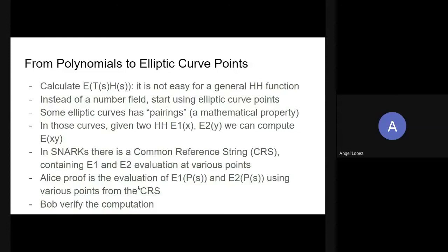That is the other hard part. One hard part is how to transform the code to polynomials, and the other hard part is how to transform the challenge of the relation of polynomials to something non-interactive, and also to use elliptic curve points from a curve that supports pairing - a mathematical property that not all elliptic curves have. That is the twist we need to add to elliptic curves to use them in this kind of proof.